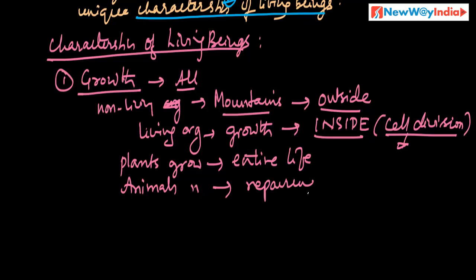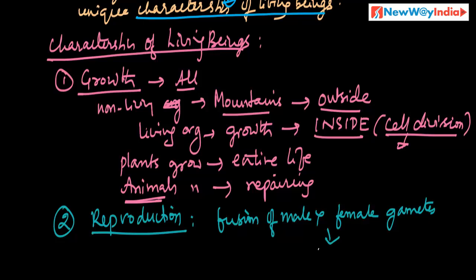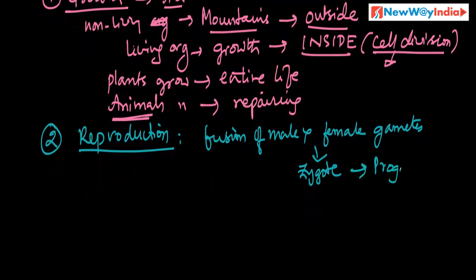The second characteristic is reproduction. Reproduction means the fusion of male and female gametes leading to the formation of a zygote. That is the main activity in living organisms. This zygote results in the formation of progeny which are similar to parents — progeny formation. This is one of the main important characteristics of living organisms.